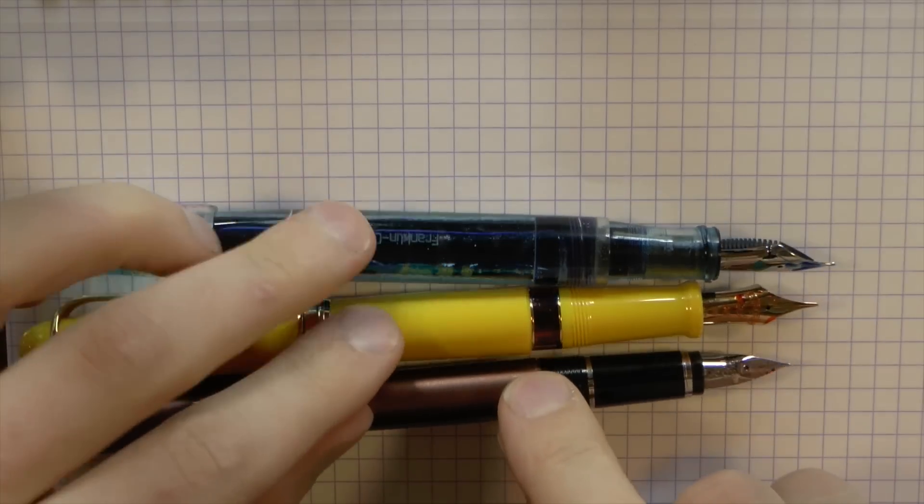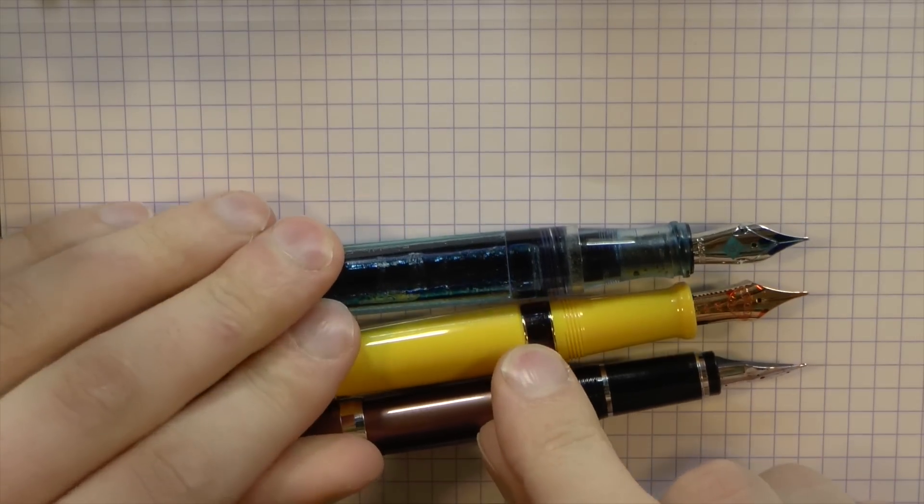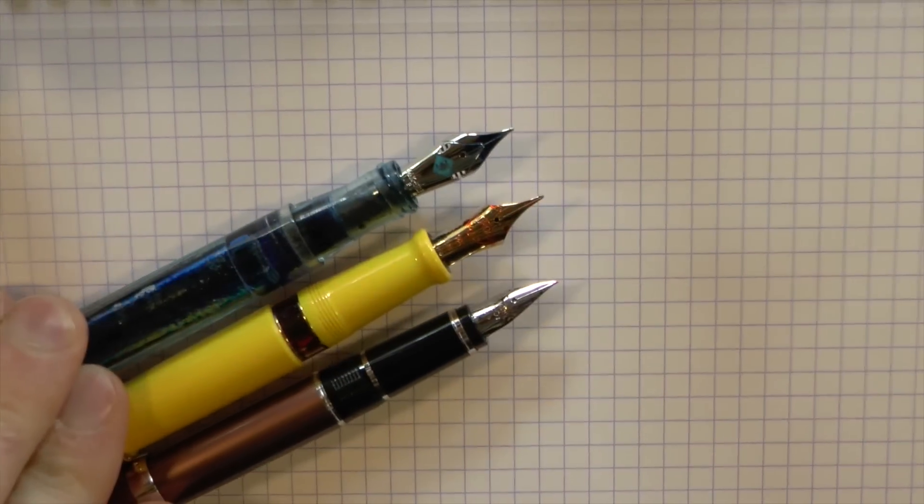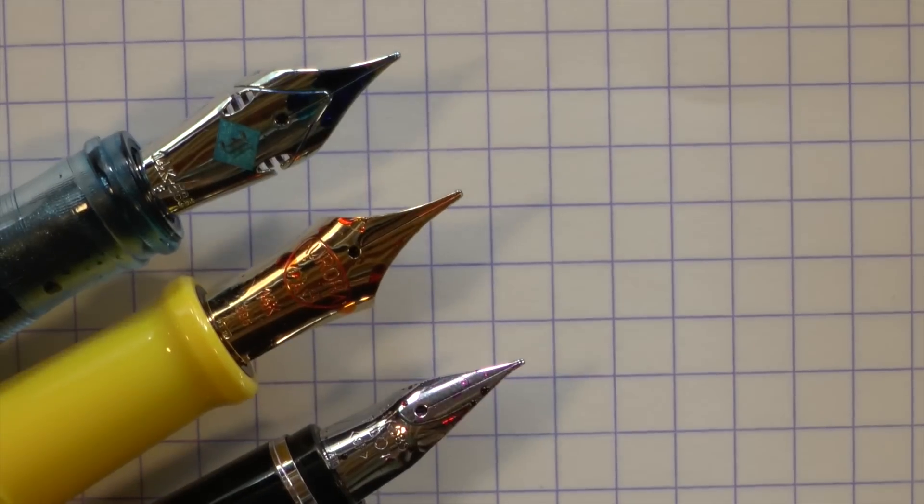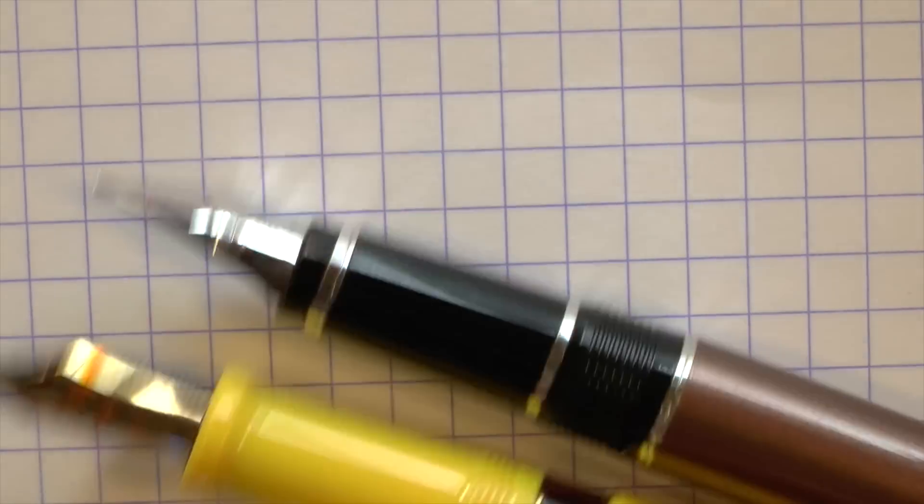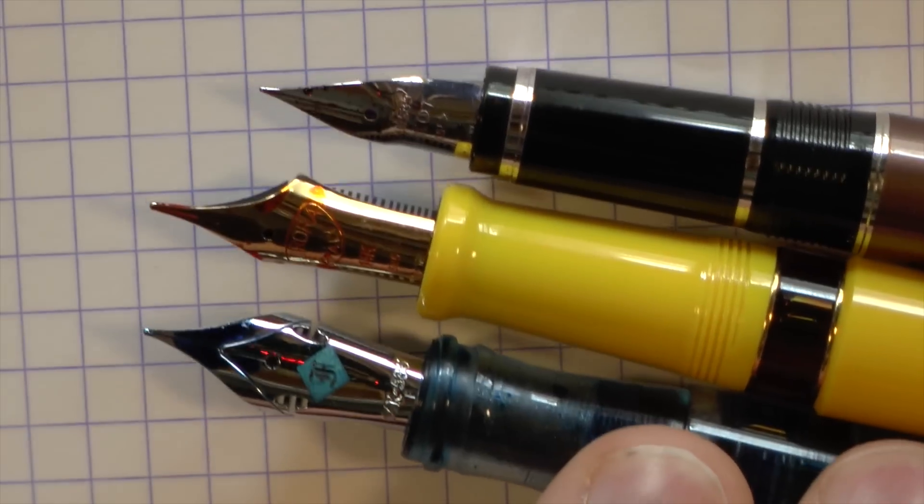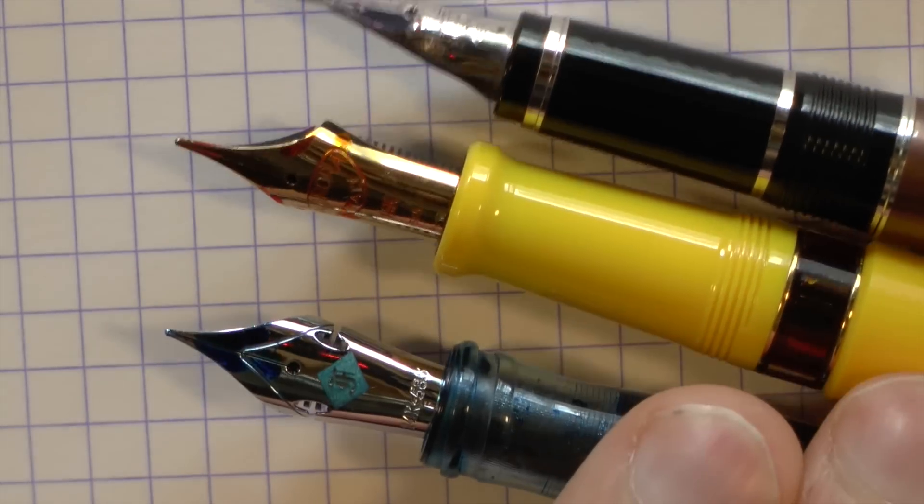Because as you may be able to see, as you can see for sure, what we're talking about here is three very different nibs. I'll try to zoom in a bit so you can see that a bit better. You see that the shapes of these three nibs are pretty different.